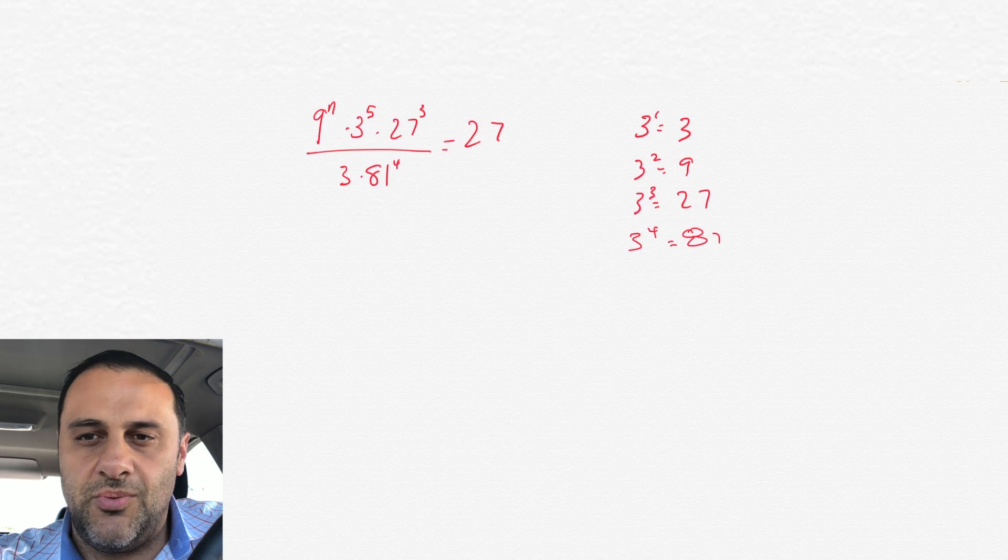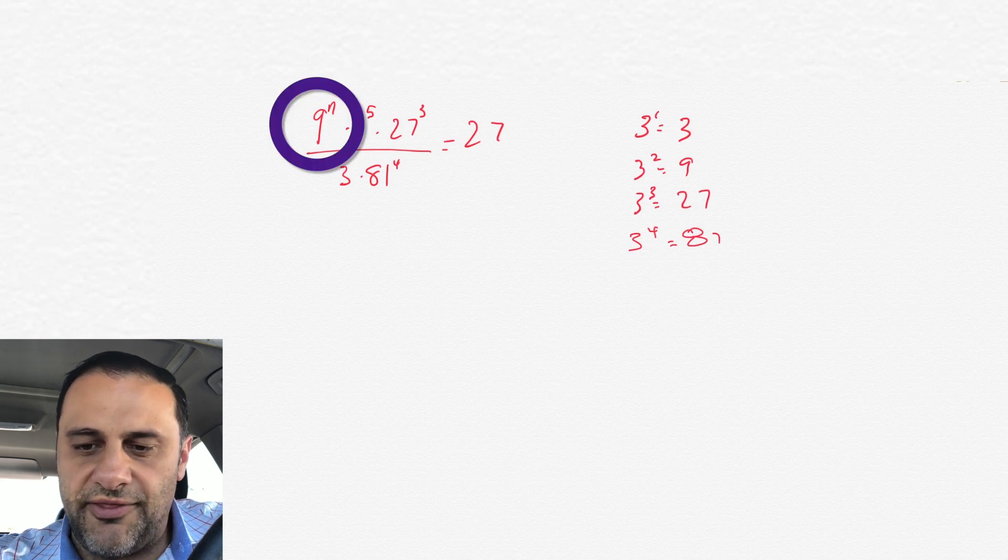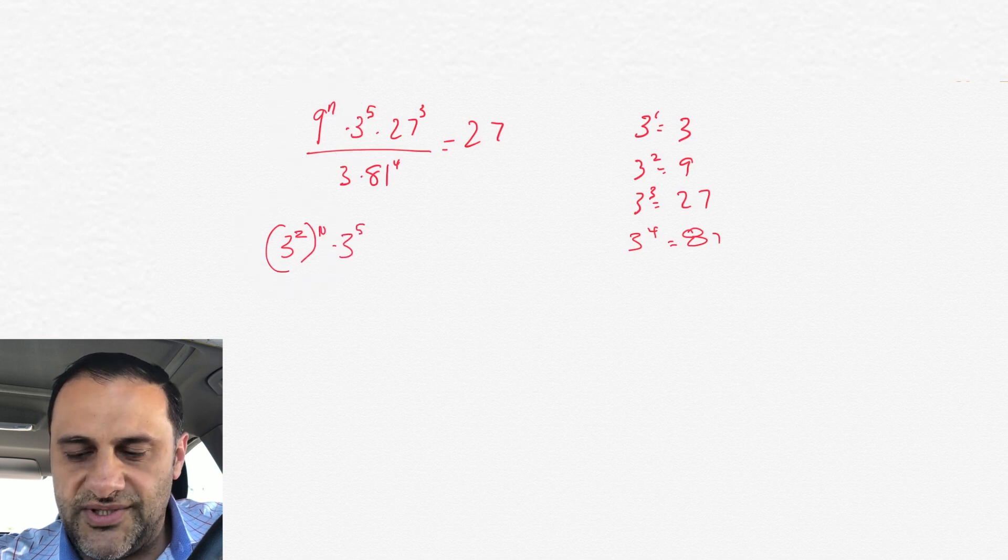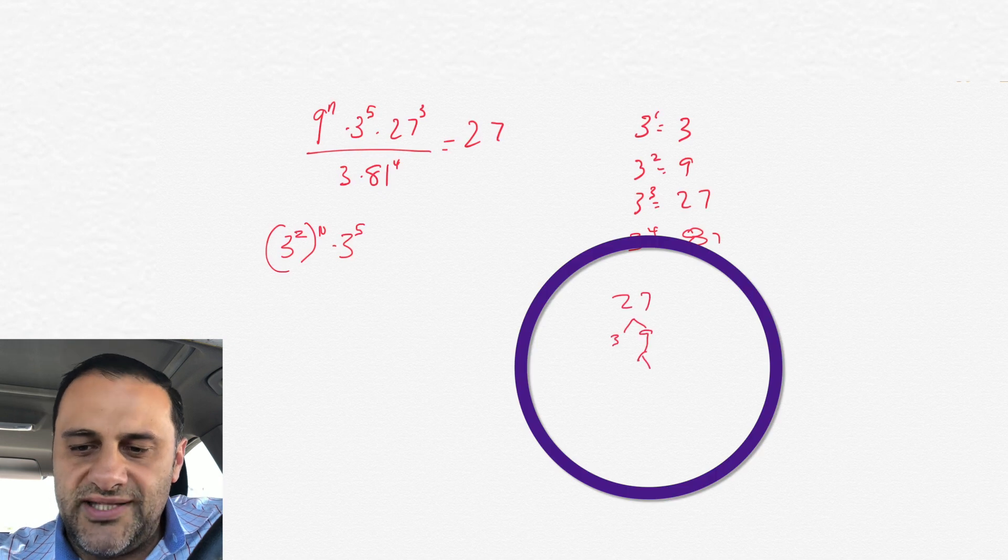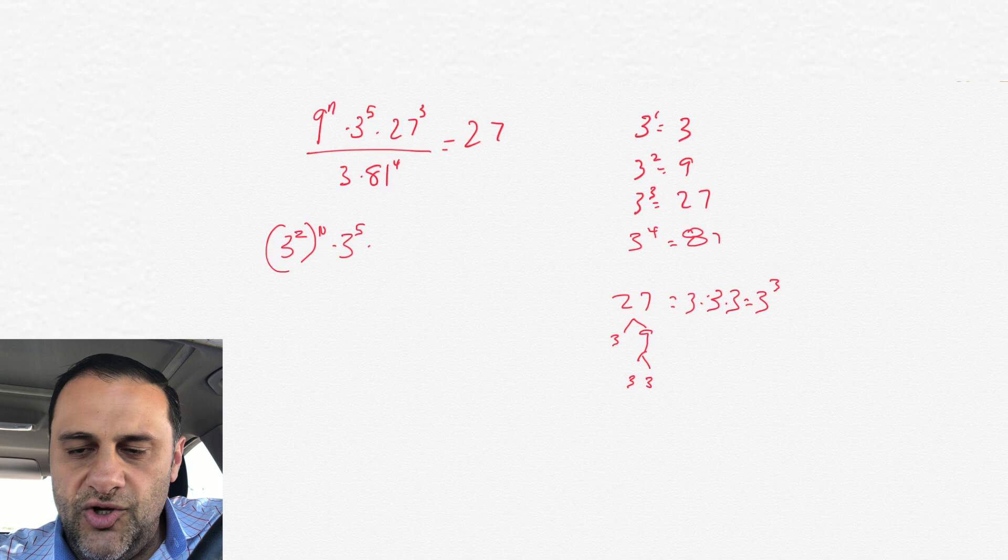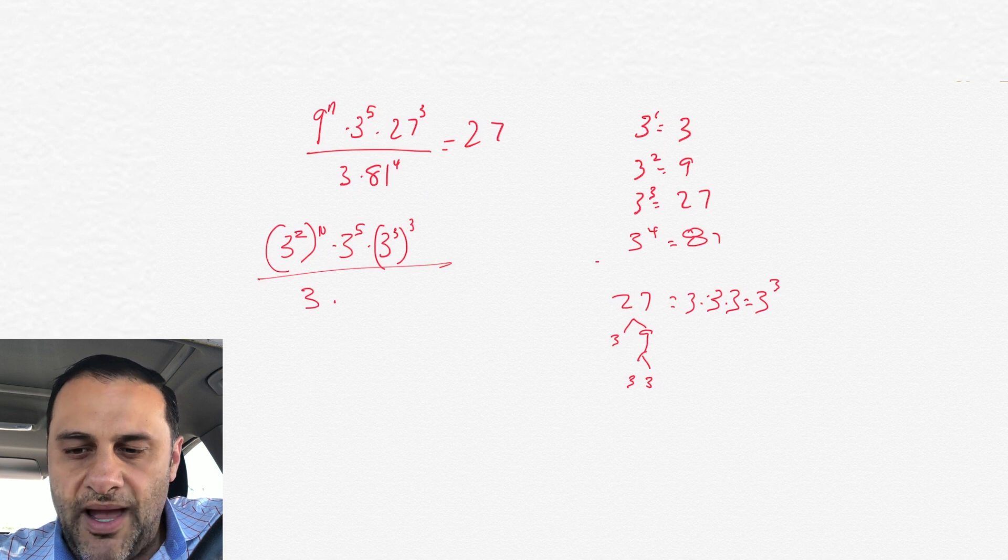That's going to be important because we want all of the numbers to have the same base, and then it's easy to manipulate the exponents. For example, 9 is like 3 to the 2, and then that needs to be raised to the n power times 3 to the 5, which was in the equation, and 27 is like 3 to the 3 or 3 cubed, so we want 3 cubed to the 3rd power, and all of that is divided by 3, and it was times 81 to the 4th power.